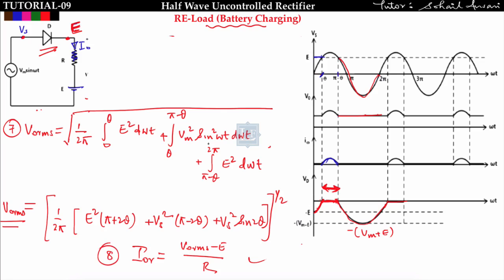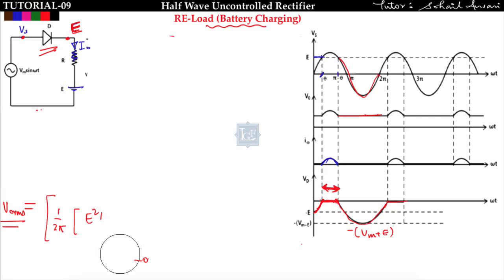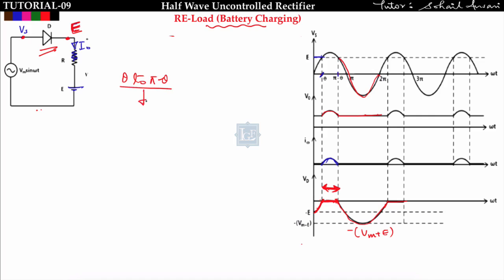These are the key formulas to keep in mind since most exam questions come from RE type of load — average output voltage, average output current, and RMS output current. Now let us see the RLE type of load. In RE type of load, the output voltage equals the supply voltage only from theta to pi minus theta — that is the range the diode conducts.